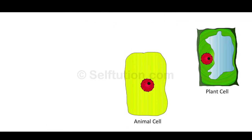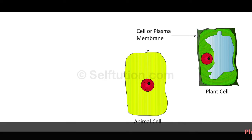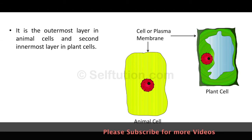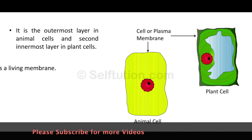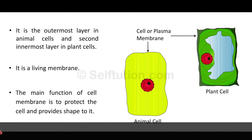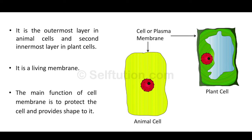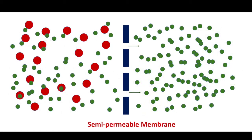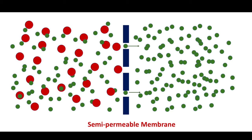The cell is surrounded by a very thin and flexible skin-like covering called the cell membrane or plasma membrane. It is the outermost layer in animal cells and the second outermost layer in plant cells. The cell membrane is a living membrane made up of lipoprotein. Its main function is to protect the cell and provide shape to it. There are very tiny holes in the cell membrane which allow materials to enter and leave the cell through these tiny pores. However, its permeability is selective — it allows certain substances to pass through and prevents others.